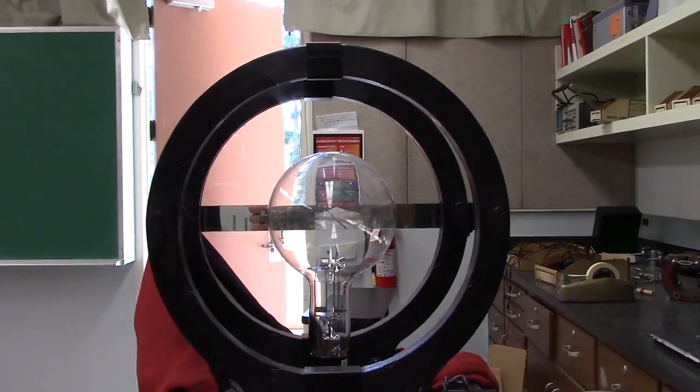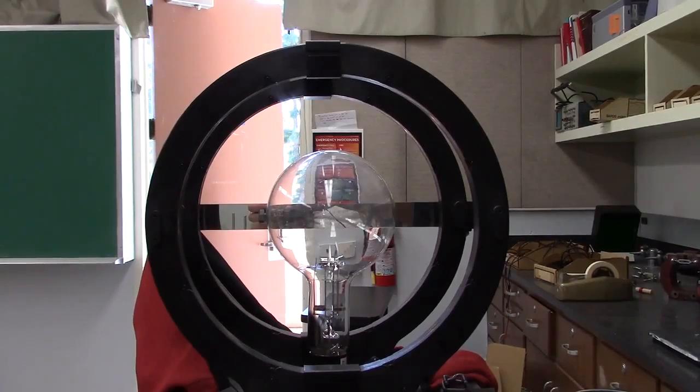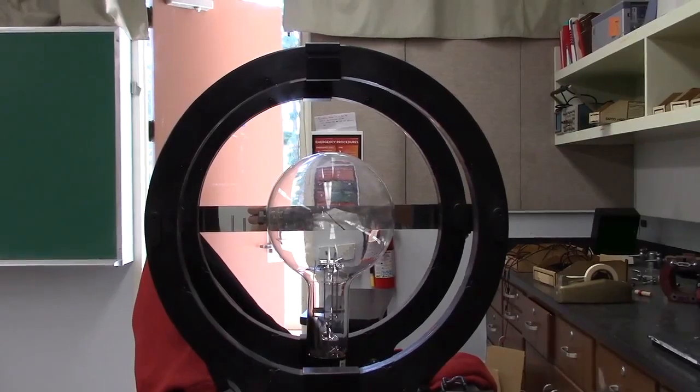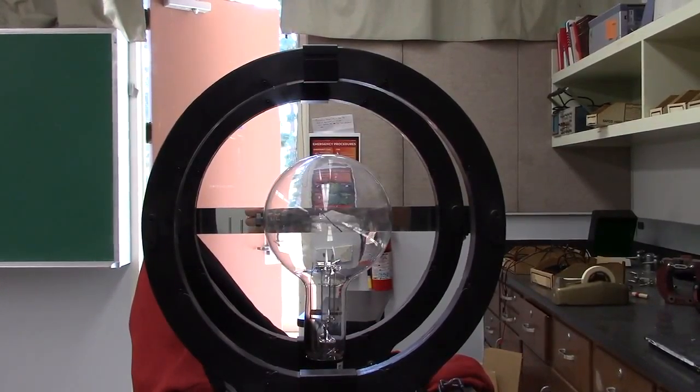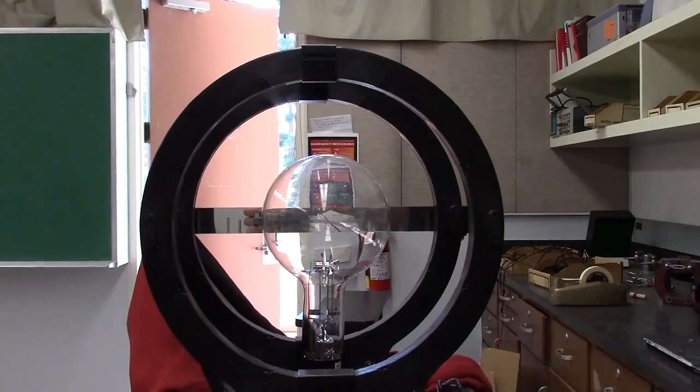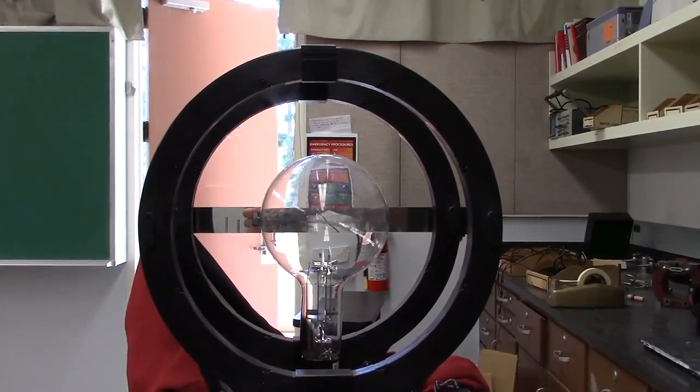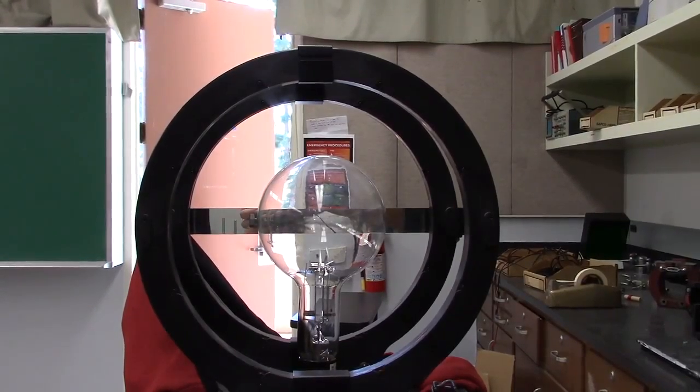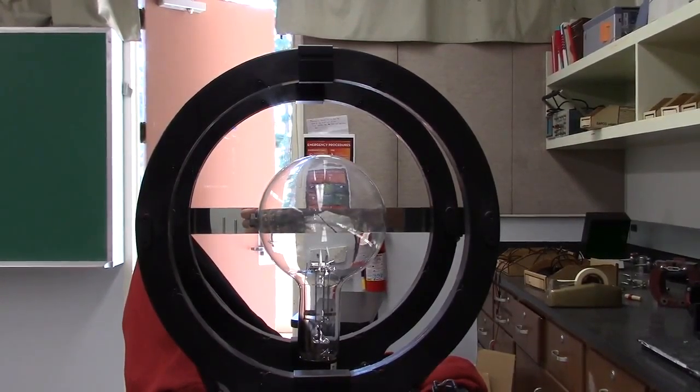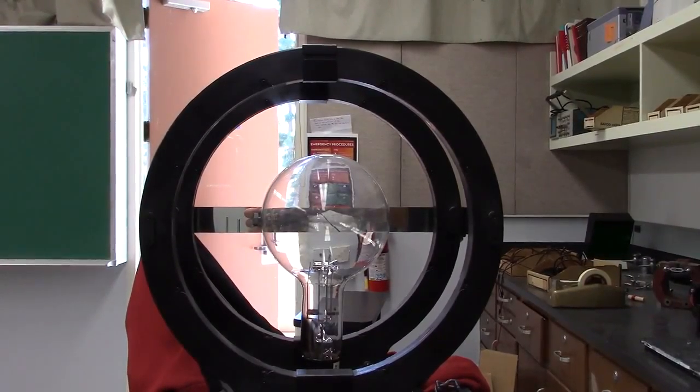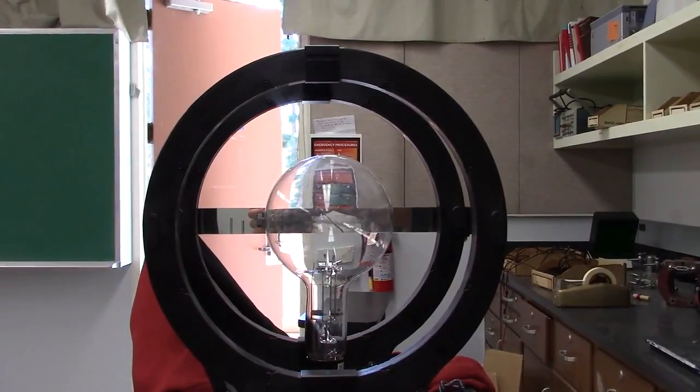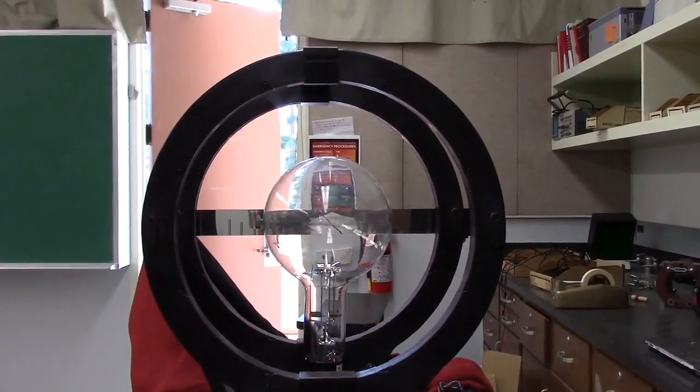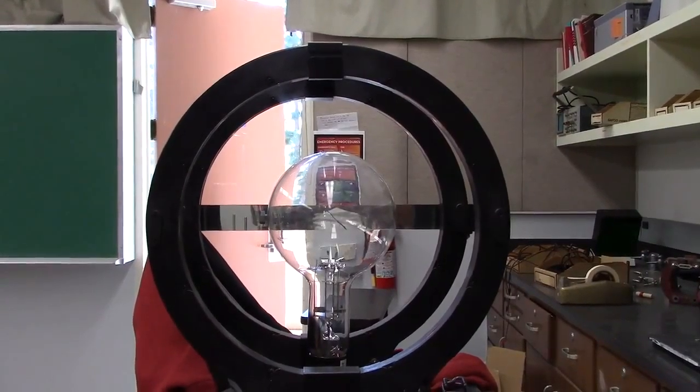When you work through the details of directions, you find that that acceleration is toward the center of this apparatus. A force provided toward the center is a centripetal force, which keeps the electrons moving around in a circle. You know how to calculate centripetal force: force equals mass times velocity squared over radius of the circle. Thus the need for a ruler to measure the radius.